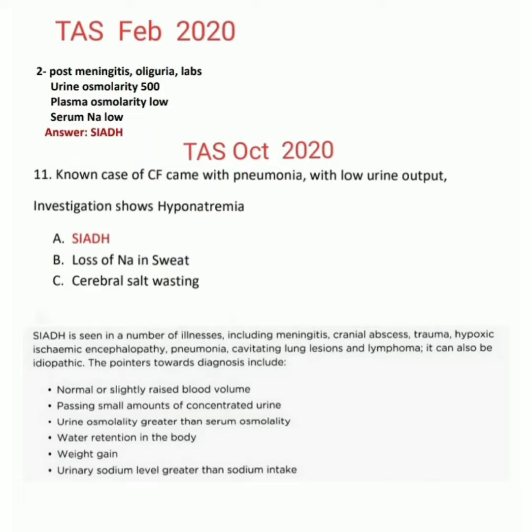Assalamu alaikum dear doctors. We are solving an important task question. The first question gives a scenario about post-meningitis oliguria, with labs showing urine osmolarity of 500, low plasma osmolarity, and low serum sodium. The answer is Syndrome of Inappropriate Antidiuretic Hormone — SIADH.